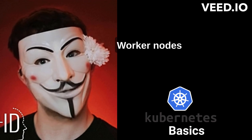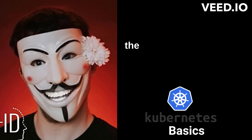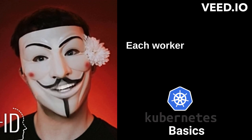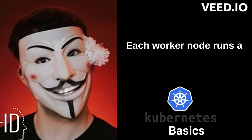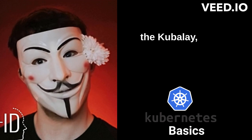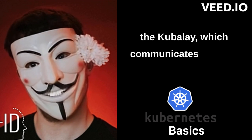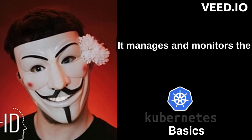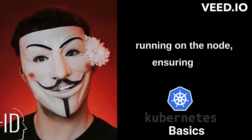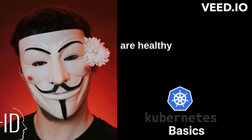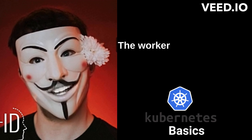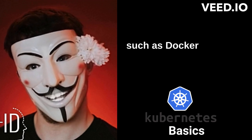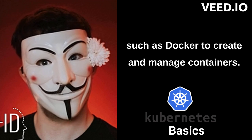Worker nodes are the worker machines that execute the tasks assigned by the master node. Each worker node runs a Kubernetes agent called the Kubelet, which communicates with the master node. It manages and monitors the containers running on the node, ensuring they are healthy and functioning properly. The worker node also runs a container runtime, such as Docker, to create and manage containers.